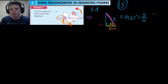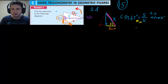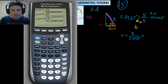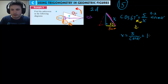To find X, we rearrange the formula. First, multiply both sides by X, then divide both sides by cosine of 67. As a shortcut, you can just switch the two figures' places, giving you X equals 5 divided by cosine of 67 degrees.